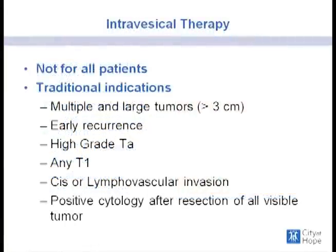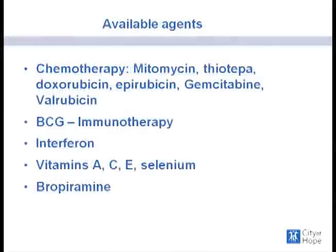Once non-muscle invasive disease is confirmed, traditional indications for intravesical therapy include multiple and large tumors, early recurrence, high-grade disease even in the TA category, T1 disease, concomitant carcinoma in situ or lymphovascular invasion, or positive cytology after resection of all visible tumor. Available agents include chemotherapy agents — mitomycin, thiotepa, adriamycin, epirubicin, gemcitabine, and valrubicin — and immunotherapy agents BCG and interferon. There is also data suggesting megadose vitamins combined with BCG may impact tumor recurrence.